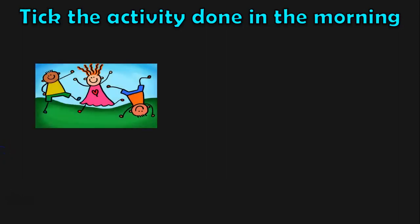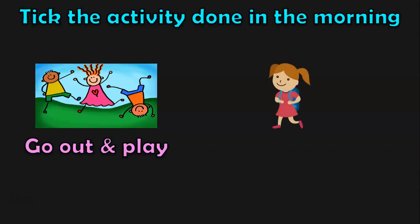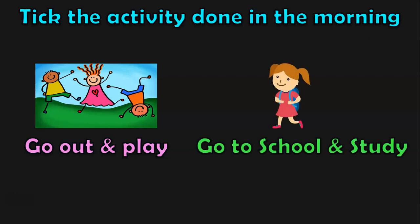Let us go to the first activity: Pick the activity done in the morning. Here I have given you a picture showing children who are playing — go out and play is the activity here. Another child is dressed up and is going to school to study. Of these two, which is the activity done during the morning time? Go to school and study is the correct answer, so put a tick inside that box.